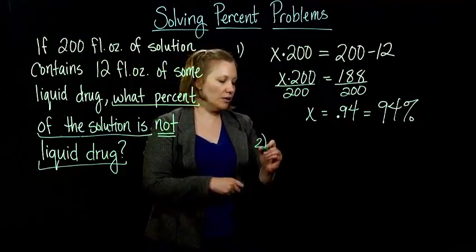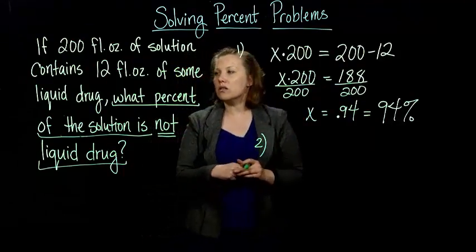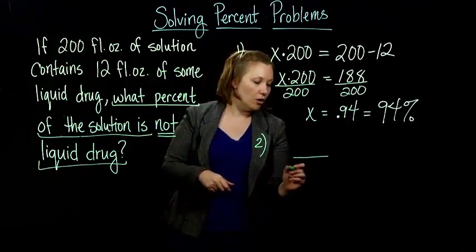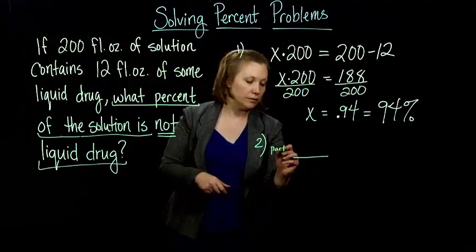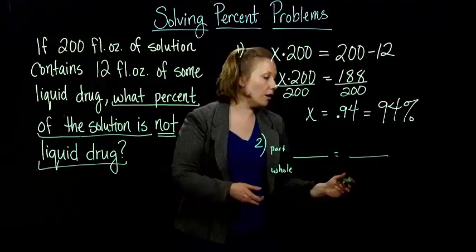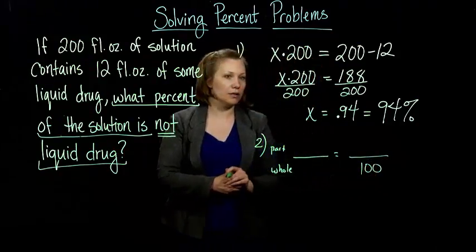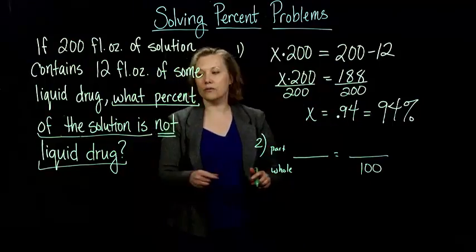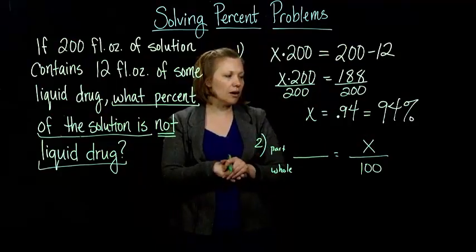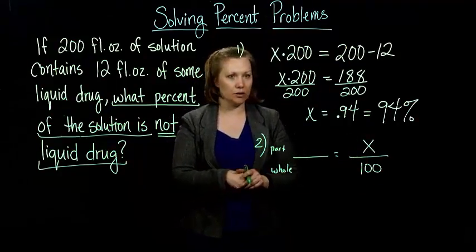We could do a similar idea, but with proportions. So with proportions, we have the part over the whole equals the part over the whole. Again, but now our whole is going to be 100%. Okay, and we're asking what percent. So that's going to be our x. We don't know the part with relationship to the percent.